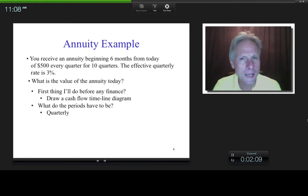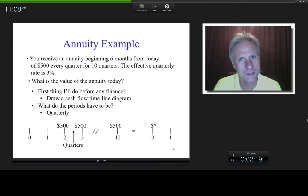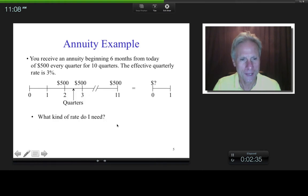Plus we've got an effective quarterly rate of 3%, so the periods have to be quarterly. So if I draw a cash flow timeline diagram and the periods are quarters, and time zero is today, then when do I get my first $500? Time period two, right, because the annuity begins six months from today. So I've got $500 beginning two quarters from today. And how many of these $500 do I have? I have 10 of them.